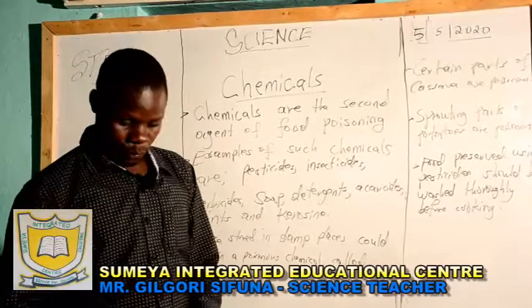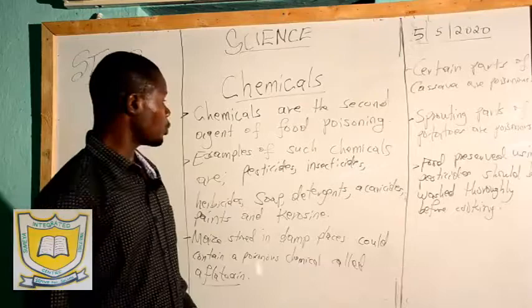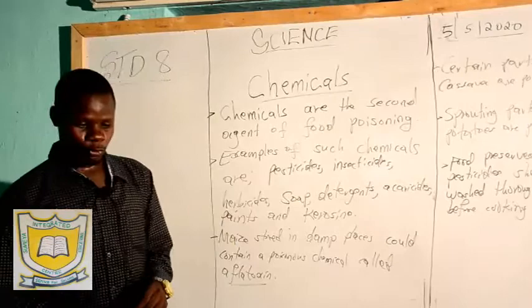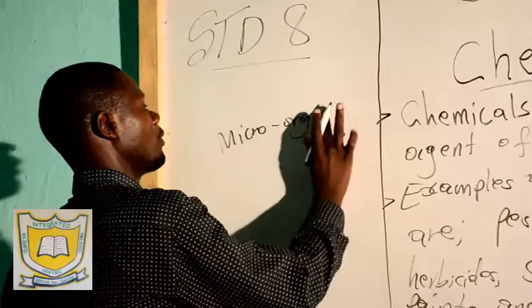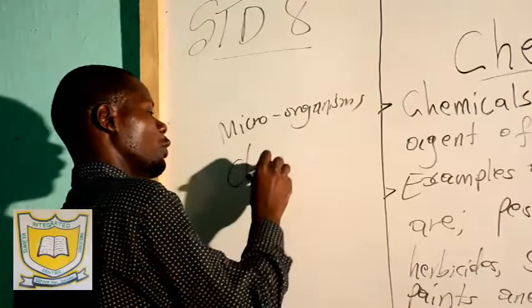Welcome for our lesson. Today I want to start covering the second part of agents of food poisoning. Last time I said there are two main agents of food poisoning: one, microorganisms, and number two, chemicals.